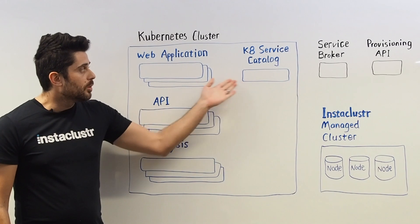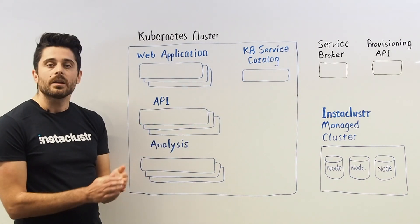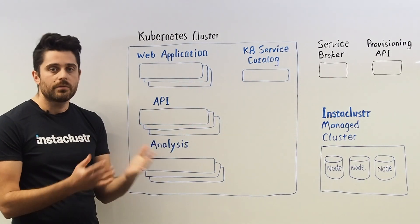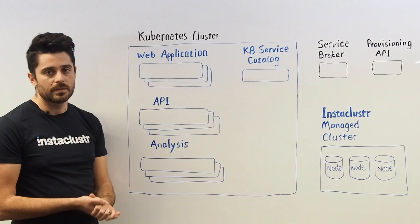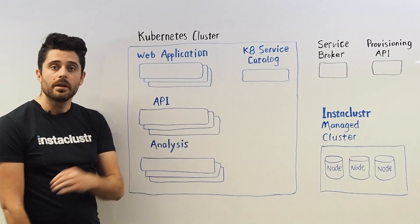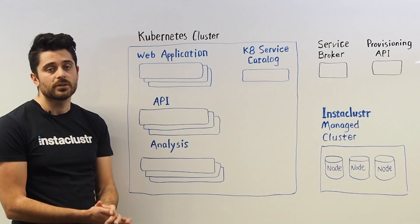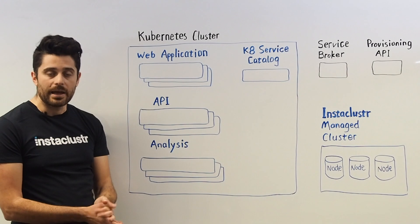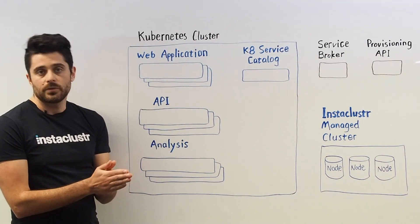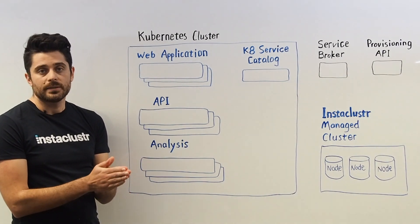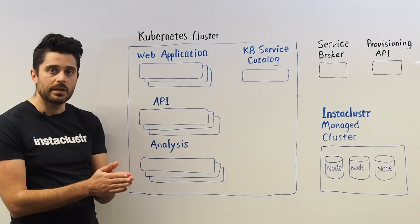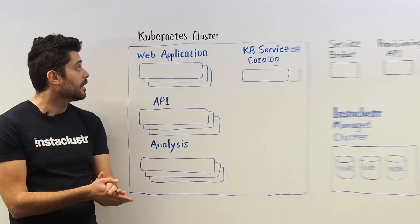That's where the Kubernetes Service Broker comes in, and we can take advantage of that using three relatively simple steps. The first step is to install the Kubernetes Service Catalog add-on, and then we make a few calls to our APIs to get our cluster up and running inside a Kubernetes environment.